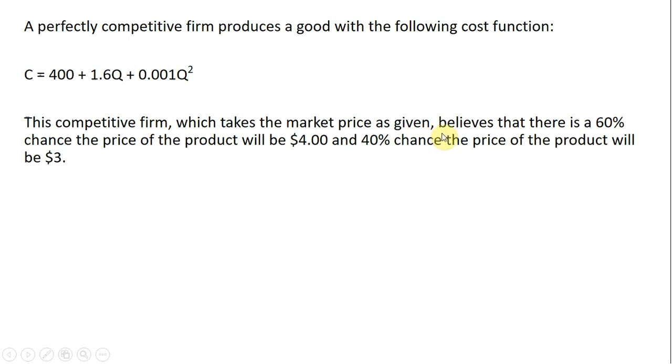However, in this problem, the firm doesn't know exactly what the market price will be. It believes that there is a 60% chance that the price of the product will be $4, and a 40% chance the price of the product will be $3.